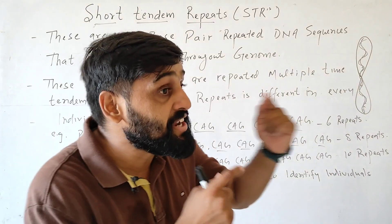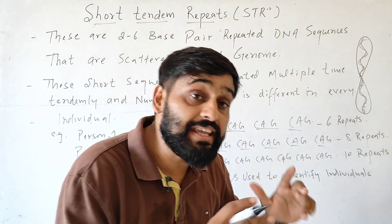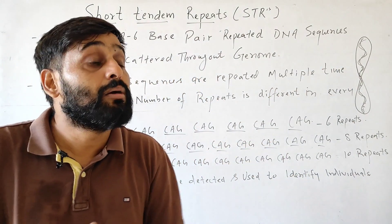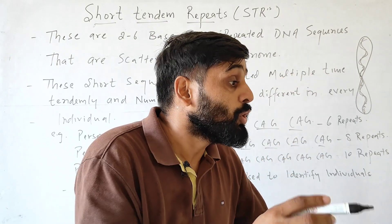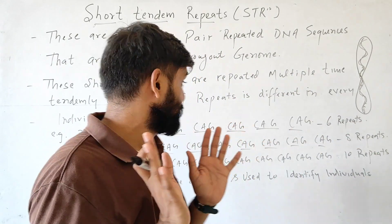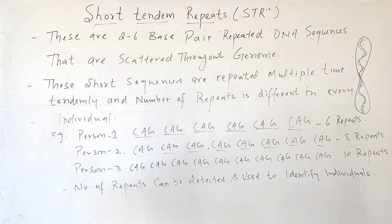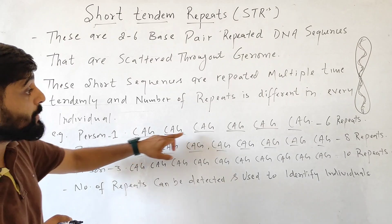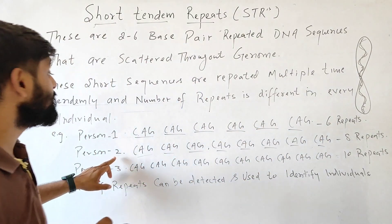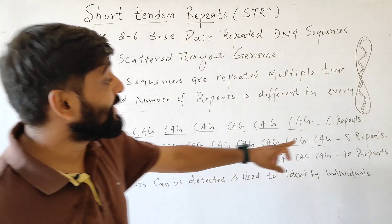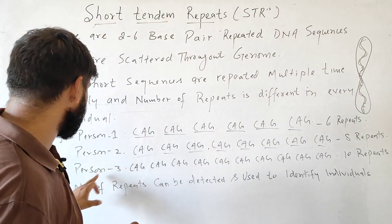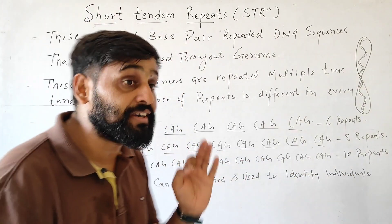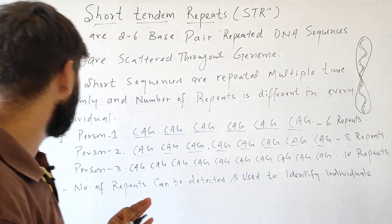The number of repeats varies from individual to individual. In one individual there may be around 1000 repeats, in another there may be 1050. For example, in person 1 the CAG short tandem repeat repeats 6 times, in person 2 it repeats 8 times, and in person 3 it repeats 10 times. So the number of repeats is different in every individual.